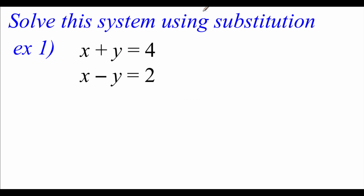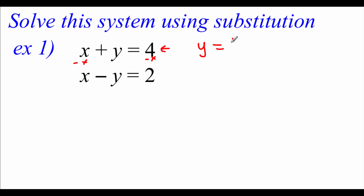In this first example, we're going to solve this system using substitution. For substitution, the first thing we want to do is take one of our equations and isolate a variable — get a variable all by itself. I'm going to work with this top equation and solve for y. I'm going to subtract the x over to the right-hand side, so our equation says y equals 4 minus x.